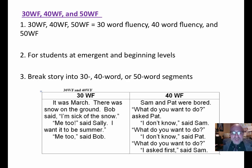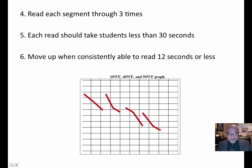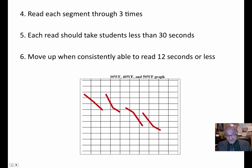For students at the emergent level, sometimes reading for one minute can be overwhelming. A strategy I use is to break a story into 30, 40, or 50-word segments. You have to use a little creativity to get exactly 30 or 40 words. Read each segment through three times, and they can see their times getting faster. Each segment should take students less than 30 seconds — if more, go down to the next level.